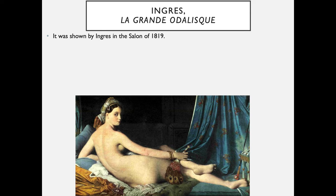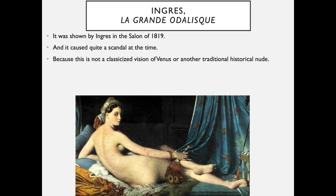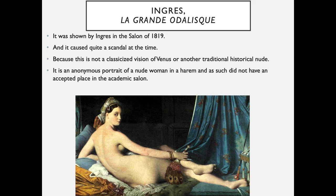This painting was shown by Ingres in the Salon of 1819 and caused quite a scandal at the time, because this is not a classicized version of Venus or another traditional historical nude — it is an anonymous portrait of a nude woman in a harem, and as such did not have an accepted place in the academic salon. Nevertheless, it was a very popular painting at the time, and it still is.